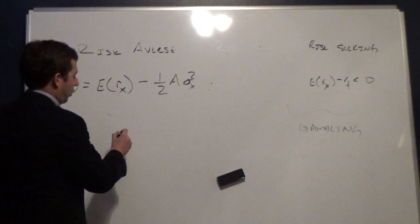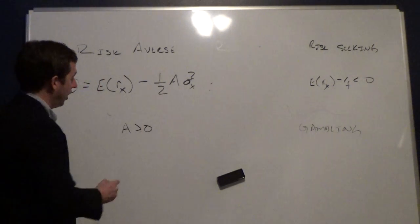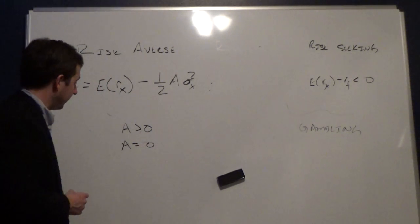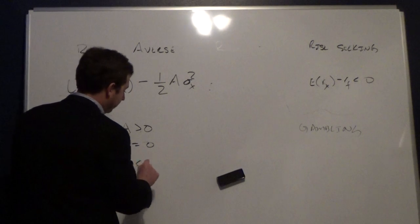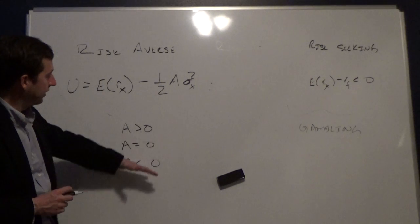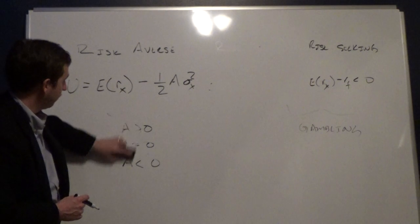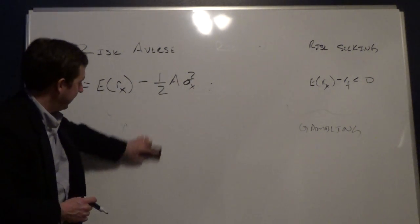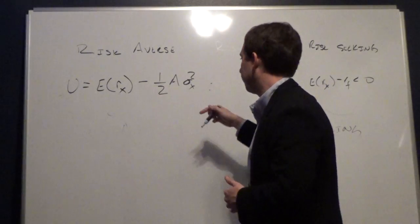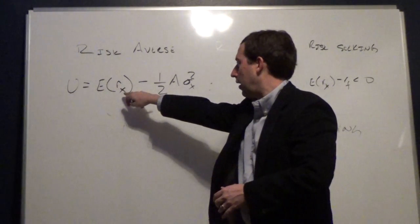Going back to our classifications: if A is greater than zero, the investor is risk averse. A risk-neutral investor has a degree of risk aversion of zero. A risk-seeking investor has a degree of risk aversion less than zero. So we can state risk neutral and risk seeking in terms of the degree of risk aversion A.